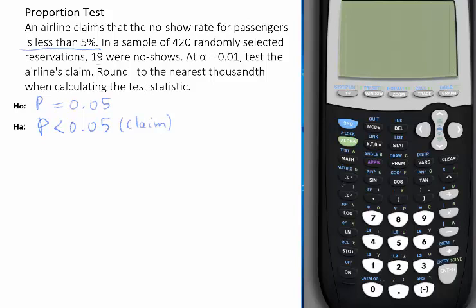In a sample of 420, so N is 420. 19 were no-shows, this is the number of successes, number of no-shows, so we call it X. X is always less than N. And he tells us that we need to test at alpha equals 0.01.